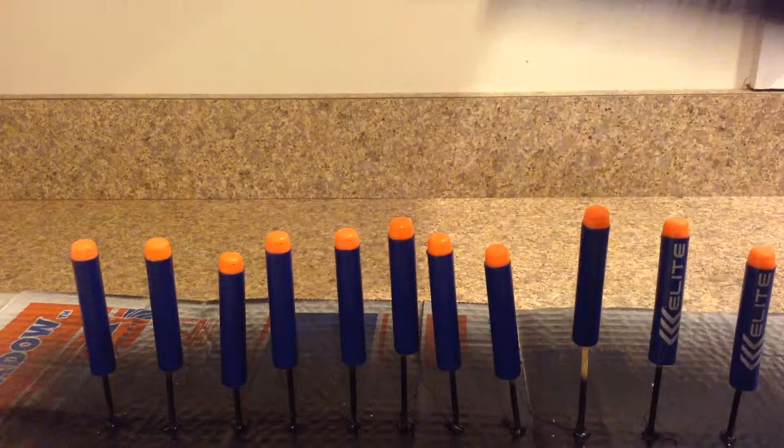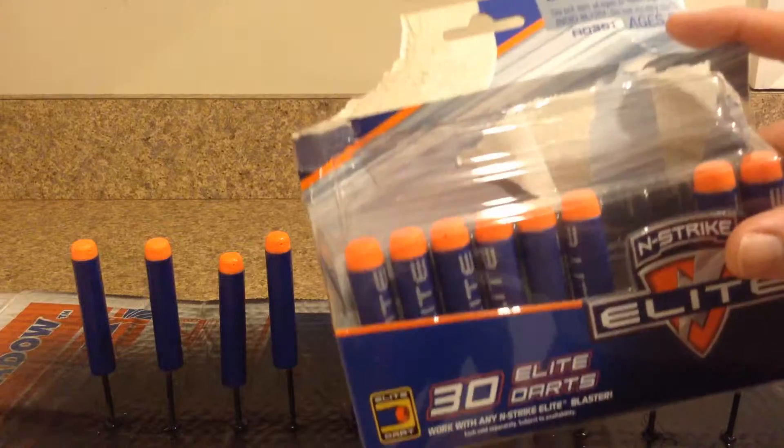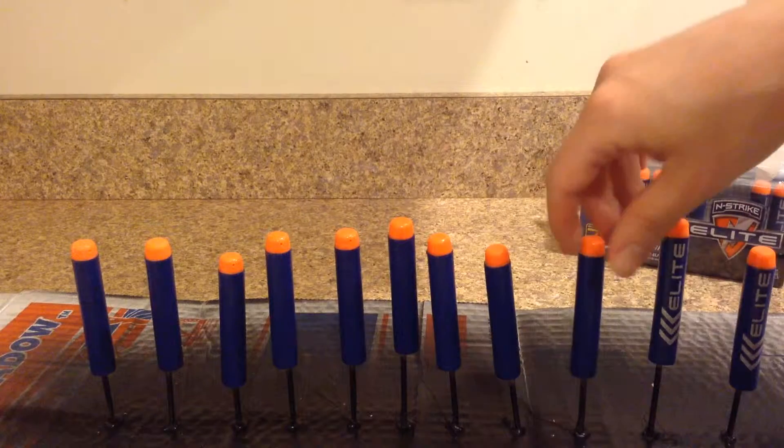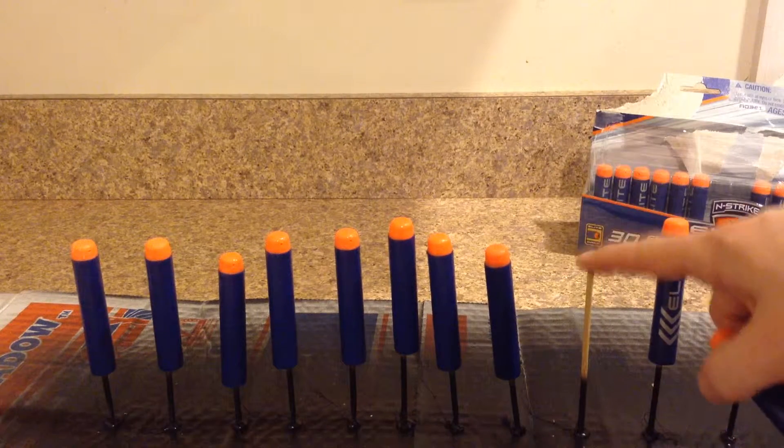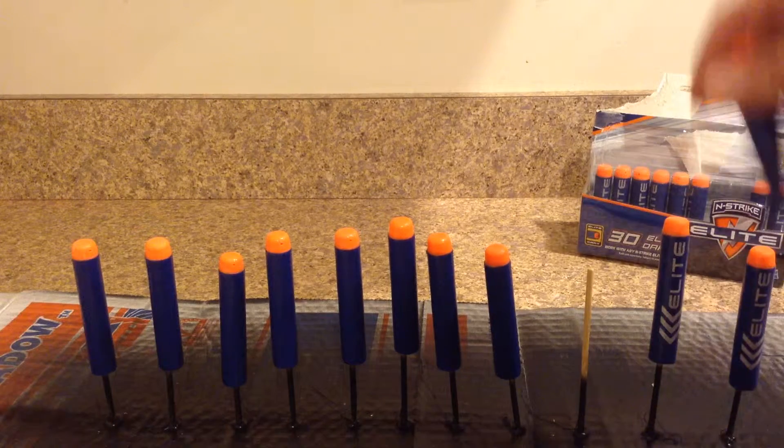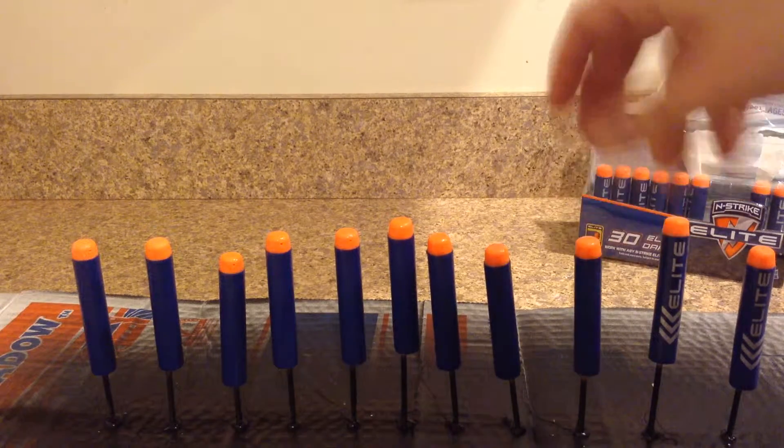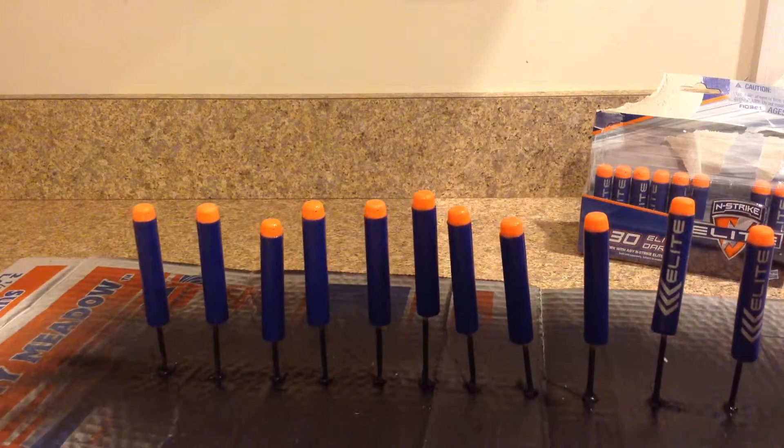So I'm using these foam darts that you can get at any kid's section, I got these at Walmart, and I made this little stand. It's just toothpicks on cardboard that I hot glued in, made it easier for gluing and spray painting.